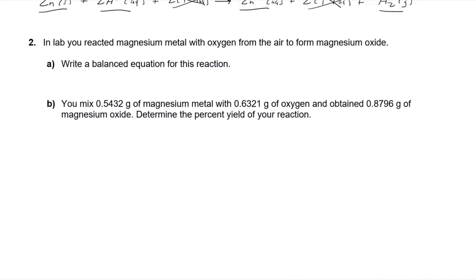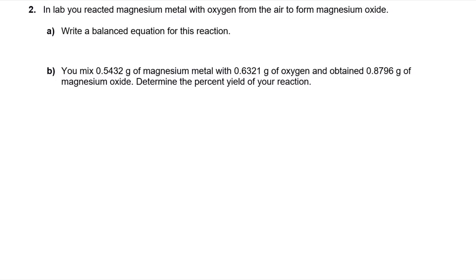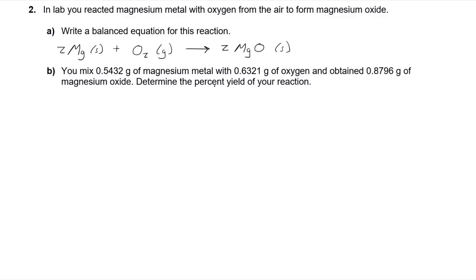This next problem deals with limiting reagent and percent yield. First, write the equation: magnesium solid reacts with O2 gas (oxygen in air is diatomic). Magnesium is typically two-plus, oxygen is two-minus, giving MgO as a solid — which you did in lab. Balancing requires a coefficient of two in front of both Mg and MgO, with one O2. Now we need to find the theoretical yield first before calculating percent yield.